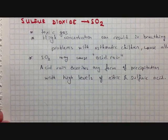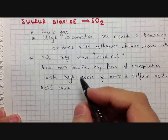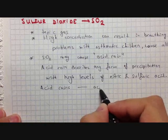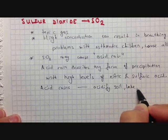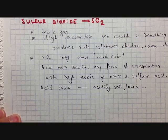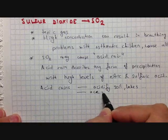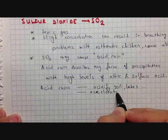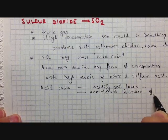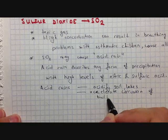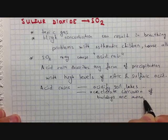What does acid rain do? First, it acidifies soil and lakes. Second, it accelerates the corrosion of buildings and monuments.